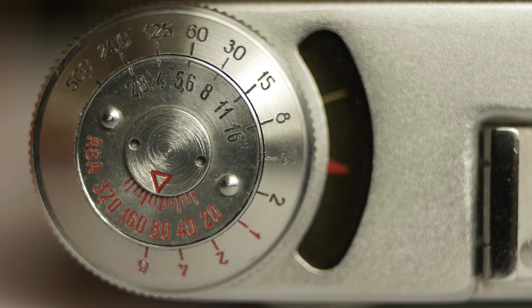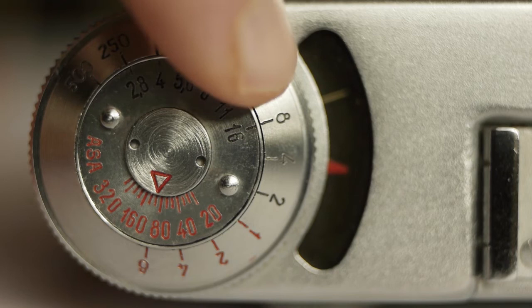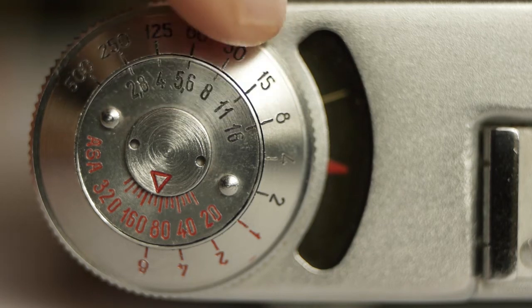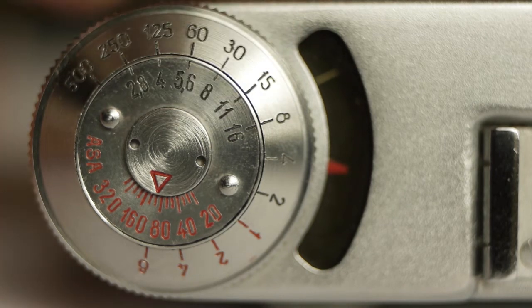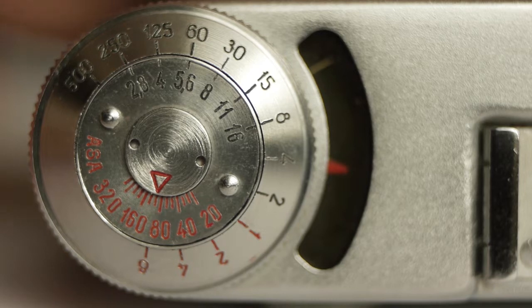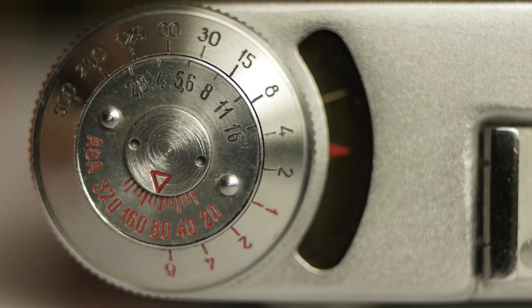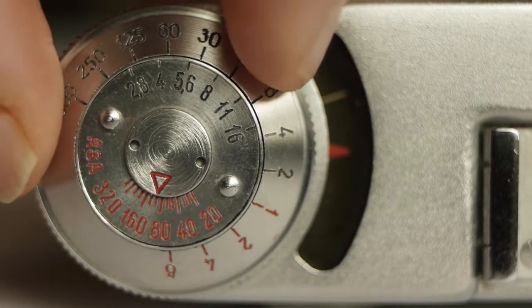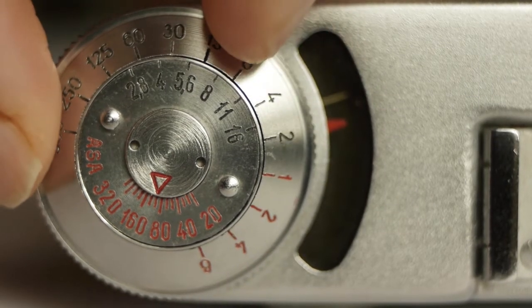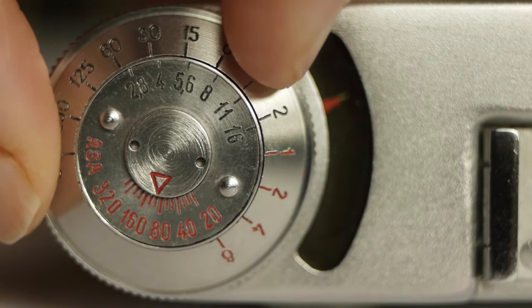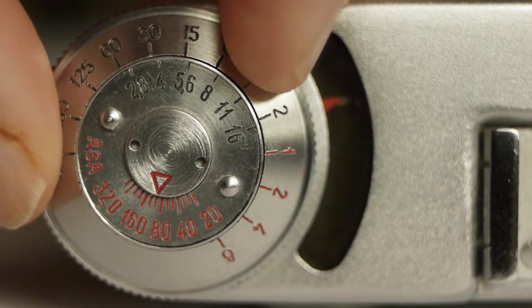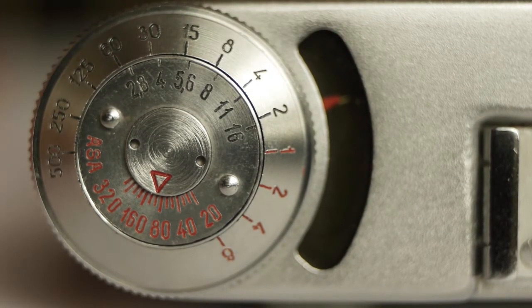The needle that actually gives the light reading is this one here at the top. If I put my hand over the light window, you'll see it move. What we then do is turn this outer dial and align the red pointer with that needle, and that gives us our light reading.